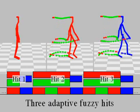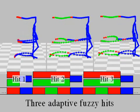In general, adaptive fuzzy search leads to a larger number of hits that are coarser with respect to space and time.